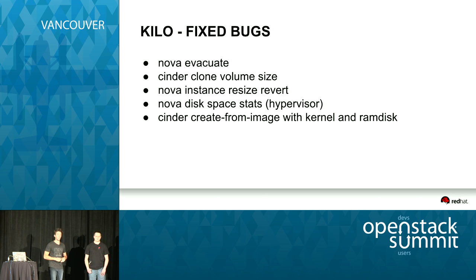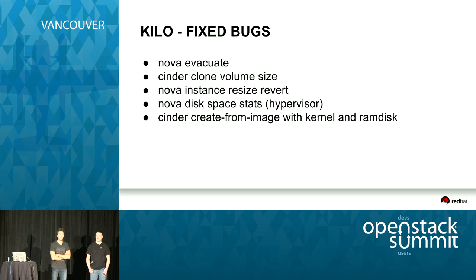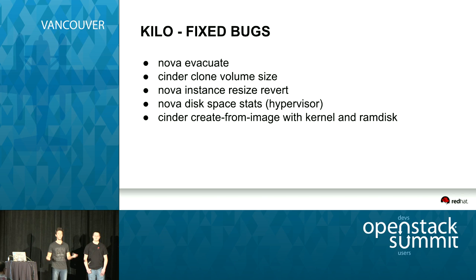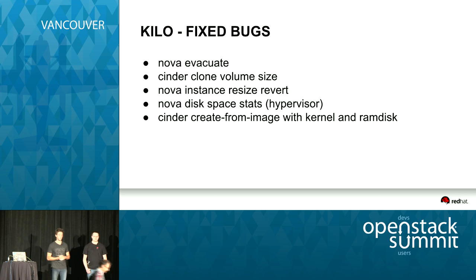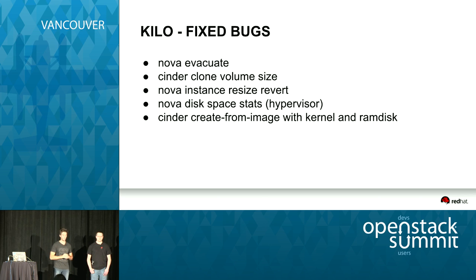We fixed a couple of bugs. The first was NovaEvacuate, which was kind of critical because many operators now rely on Ceph — they all boot instances into Ceph, and if one hypervisor goes down, you really want to do NovaHostEvacuate or NovaEvacuate an instance to re-bootstrap it on your OpenStack environment. Having this broken was a problem. We also fixed some Cinder issues while cloning a volume — creating a volume from a volume and getting a clone with the wrong size — that was fixed.